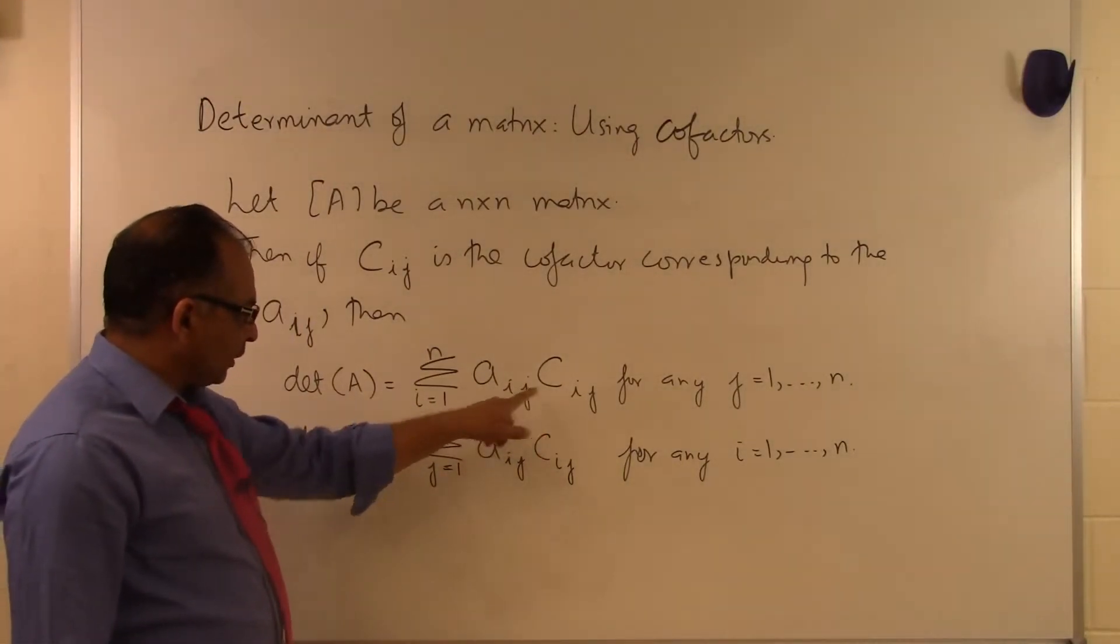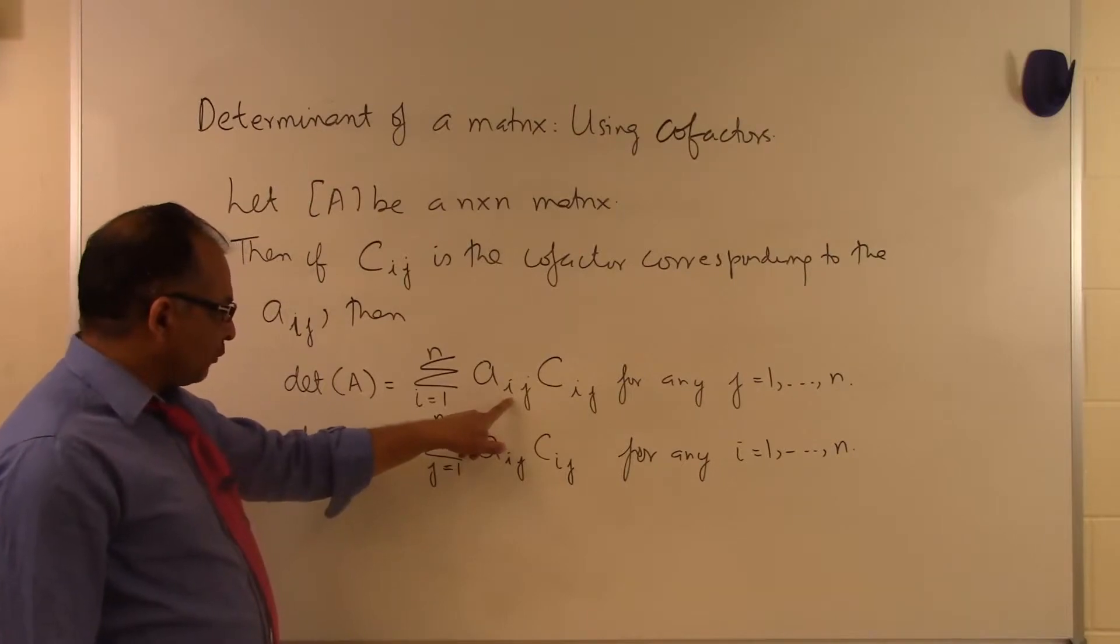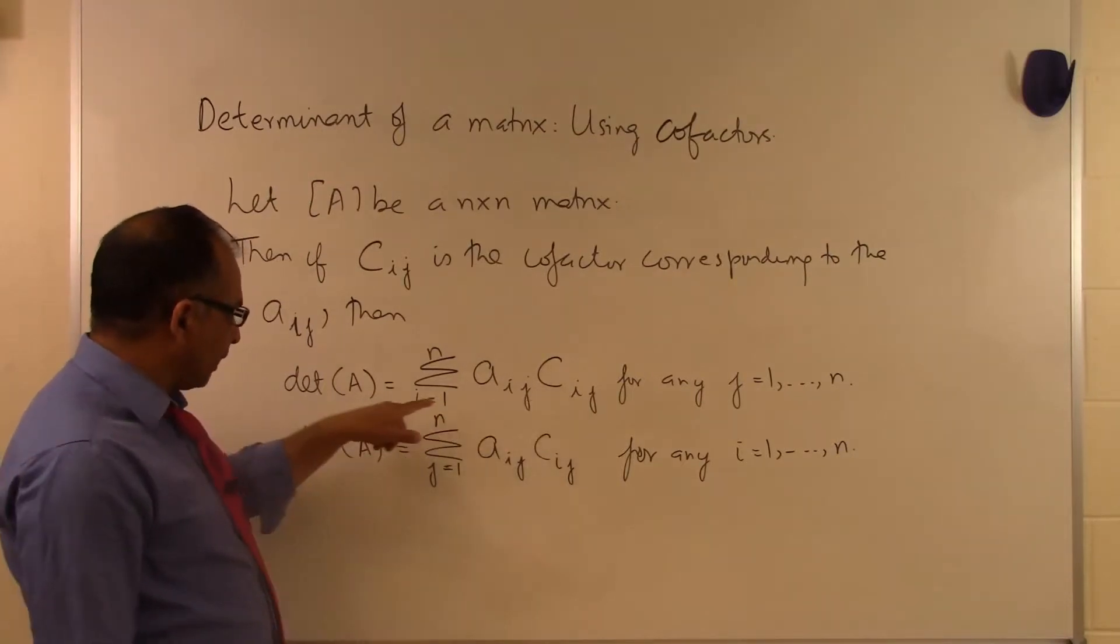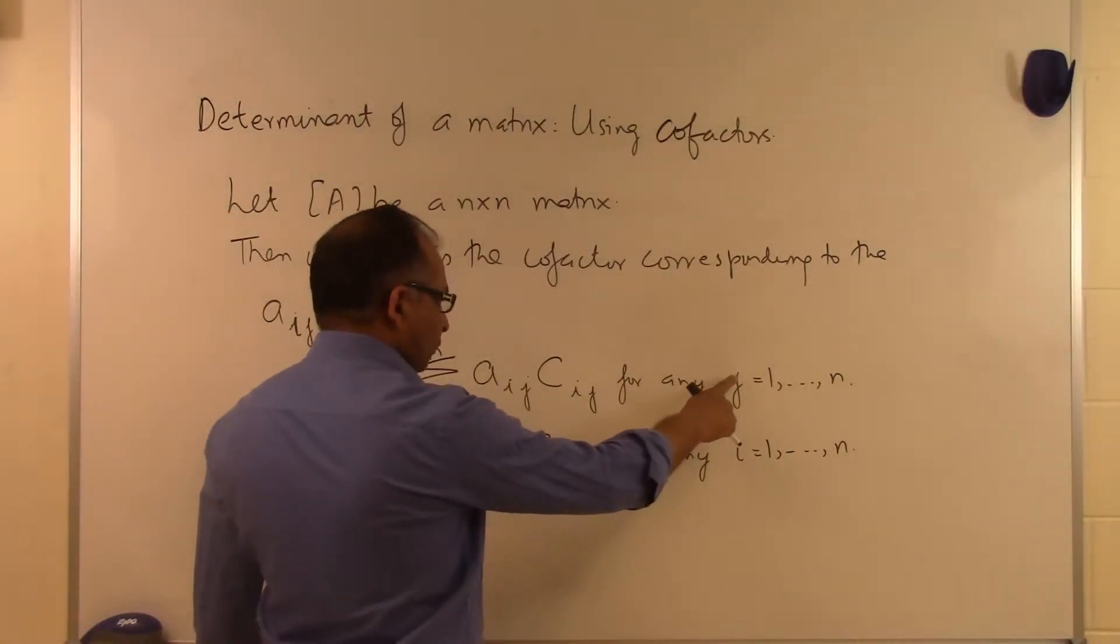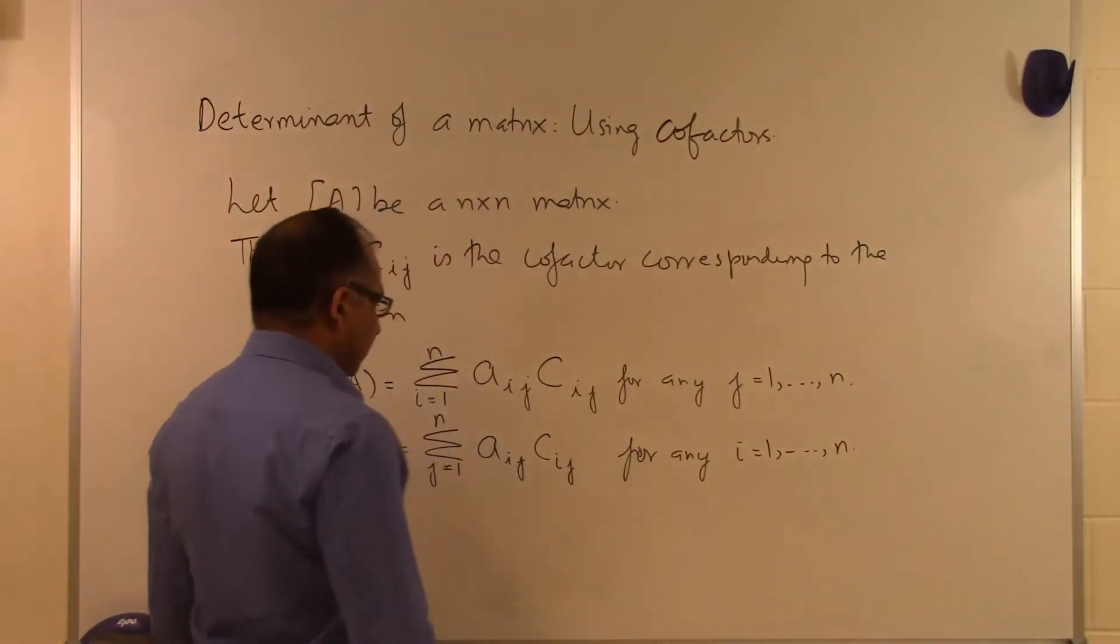First by calculating this product for each value of Aij times Cij for i going from 1 to n. But we can use any value of j from 1 to n.